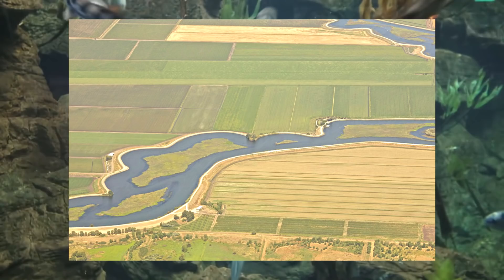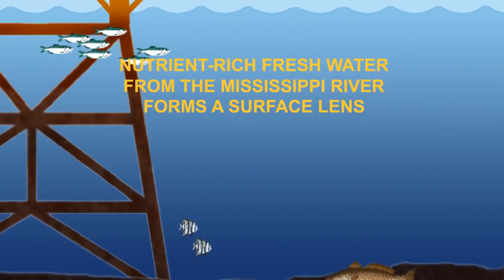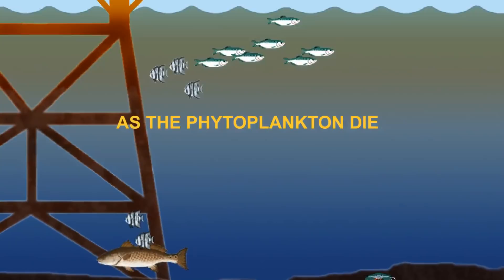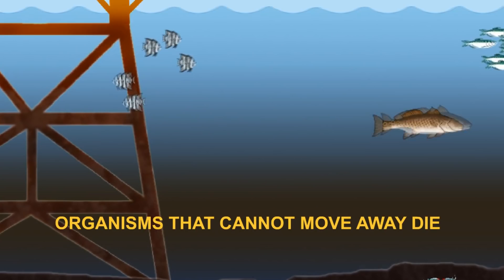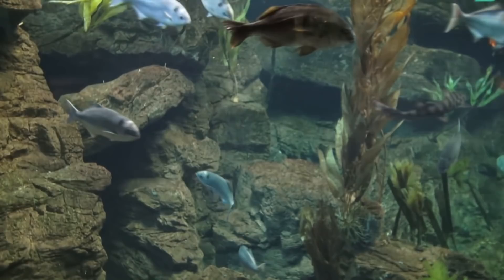Once the minerals and nutrients enter the northern portion of the Gulf of Mexico, algae feed on them, increasing their numbers exponentially. Once they die, the algae sink to the bottom, where they are eaten by bacteria. While feeding, the bacteria consume the oxygen in the water. Considering the increasing growth of algae, bacteria growth also flourishes, leading to the eventual depletion of oxygen in the water and the formation of a dead zone.